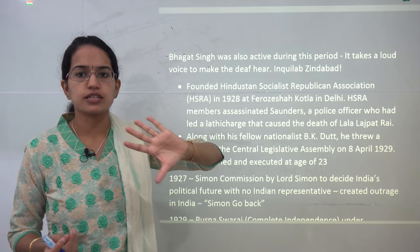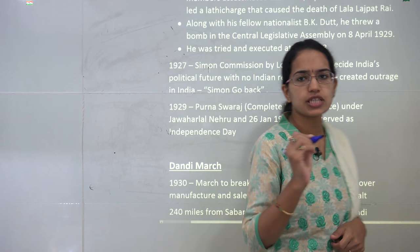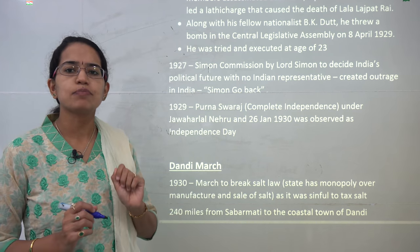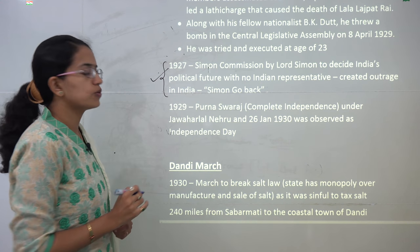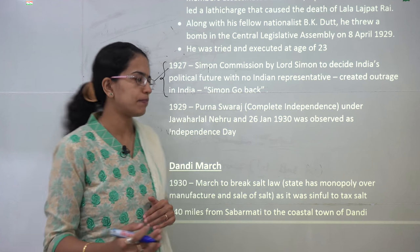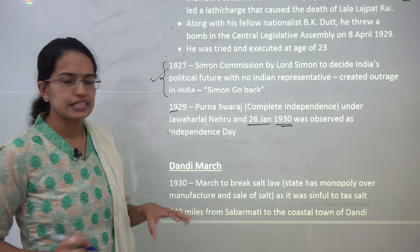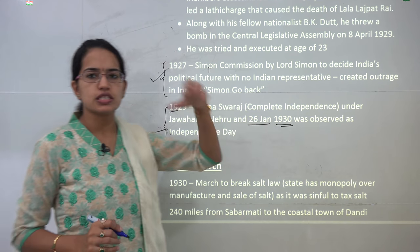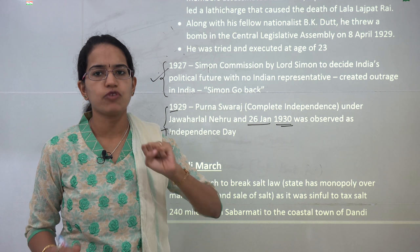Bhagat Singh's association was responsible for the assassination of Saunders — the policeman who had lathi-charged Lala Lajpat Rai, which eventually led to Lala Lajpat Rai's death. They also threw a bomb in the central legislative assembly. Though Bhagat Singh followed Gandhi's vision in some ways, he was an extremist by nature. In 1927, the Simon Commission came to India without any Indian representative, leading people to give the slogan 'Simon go back.' In 1929, came the idea of Purna Swaraj or complete independence.